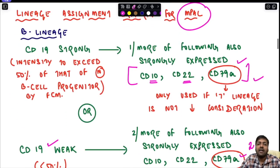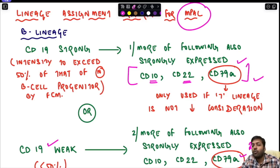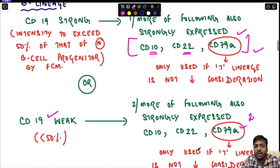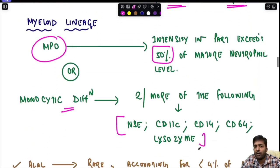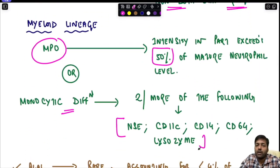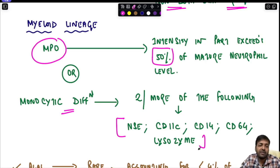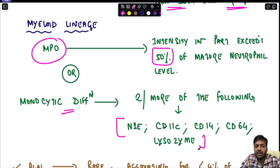The principle of intensity requires at least 50% intensity compared to the normal progenitor for both B and T lymphoid lineages. The principle of pattern is also important: for example, normal maturing myeloperoxidase-positive cells show variable MPO positivity. A dim, uniform MPO positivity should not be taken as positive — the pattern of expression matters.